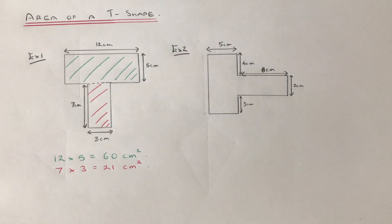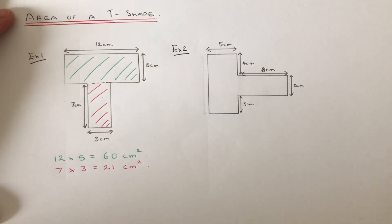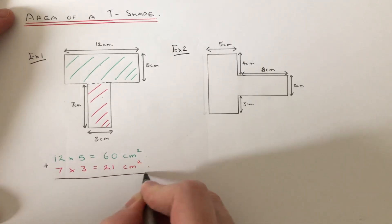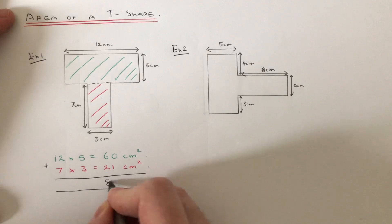So once we've worked out the area of the two separate rectangles which make the T-shape, you just add these two numbers up now to give a final answer. So 60 add 21 is 81cm squared.